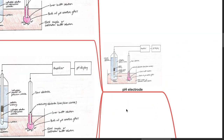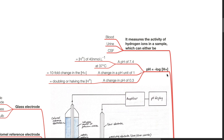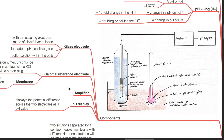The pH electrode measures the activity of hydrogen ions in a sample, which can be blood, urine, or CSF. pH equals negative log of hydrogen ion concentration. A pH of 7.4 equals a hydrogen ion concentration of 40 nanomoles per litre at 37 degrees Celsius. A change of 1 pH unit equals a 10-fold change in hydrogen ion concentration. A change in pH of 0.3 equals a doubling or halving of the hydrogen ion concentration. Components include the glass electrode, calomel reference electrode, amplifier, and pH display.